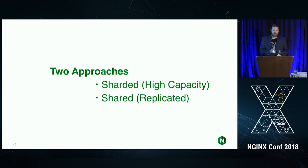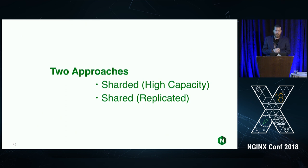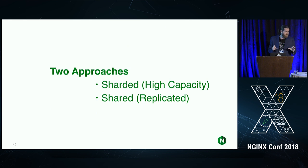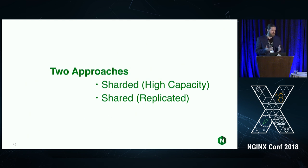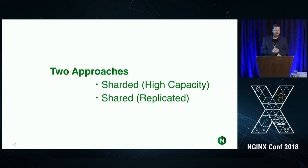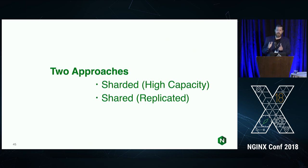For high availability, there are two ways to do it with NGINX. NGINX, when it comes to caching, doesn't have any clustering functionality because everything is disk-based. To properly cluster and share cache state you would have to copy files. The two recommended approaches are a sharded cache or a shared cache environment.